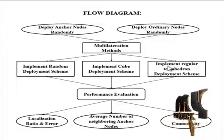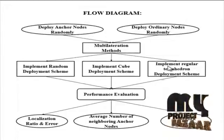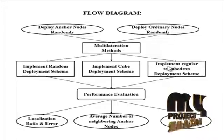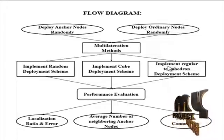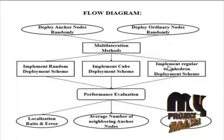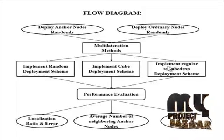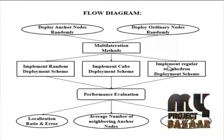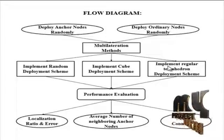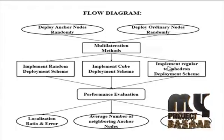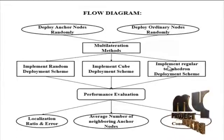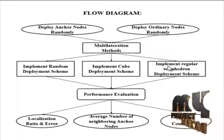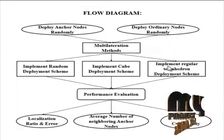In the regular tetrahedron deployment scheme, the approach can achieve higher localization accuracy while maintaining good localization ratio, average number of sensor nodes, and network connectivity. Anchor nodes are deployed at the vertices of pre-positioned regular tetrahedrons. The regular tetrahedron deployment scheme has smaller localization error than both the random deployment scheme and the cube deployment scheme in general.